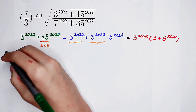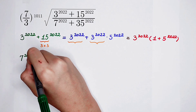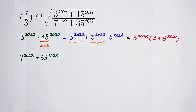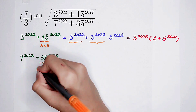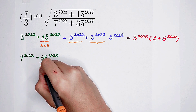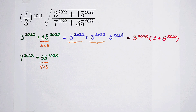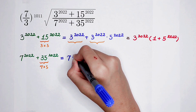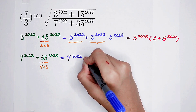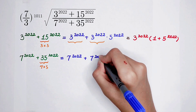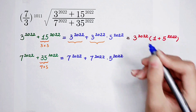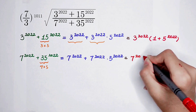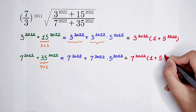Our second work: calculate 7 to the power of 2022 plus 35 to the power of 2022. Simplify it just like this — 35 can be written as 7 times 5. So we just use the same way. Here it is 7 to the power of 2022 plus 7 to the power of 2022 times 5 to the power of 2022, which gives 7 to the power of 2022 times (1 plus 5 to the power of 2022).